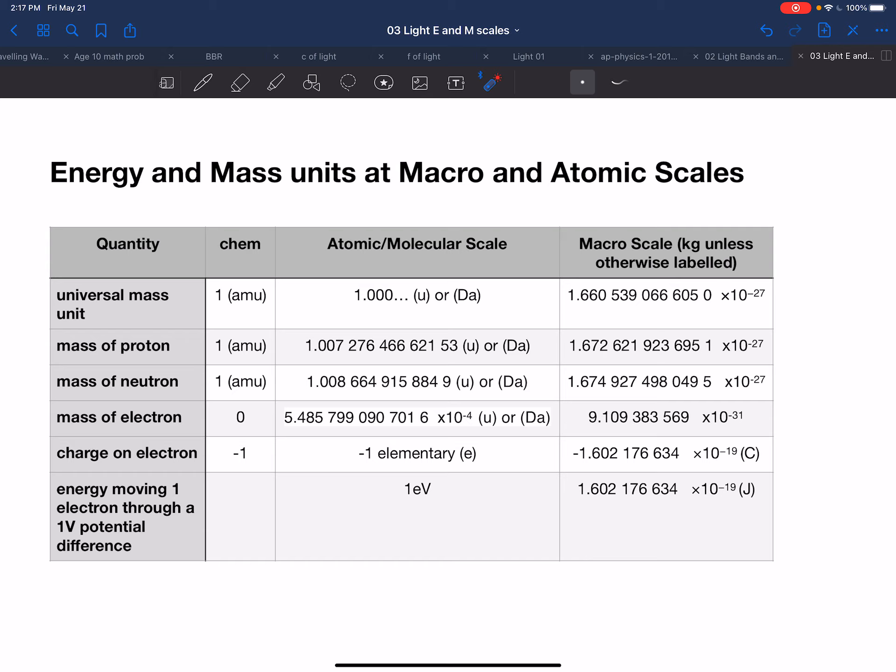When we get to the mass of an electron, of course, you are familiar with it having zero mass in terms of AMUs. But this is it in U's or Dalton's, times 10 to the minus 4th. And we may recognize this in terms of the kilograms, 9.11 times 10 to the minus 31 kilograms.